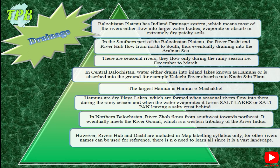In the southern part of the Balochistan Plateau, rivers like the Dasht and River Hub flow from north to south and eventually drain into the Arabian Sea. These are the only rivers included in the map labeling syllabus. There are also seasonal rivers which flow only during the rainy season — December to March — when western depressions are very active in this area.